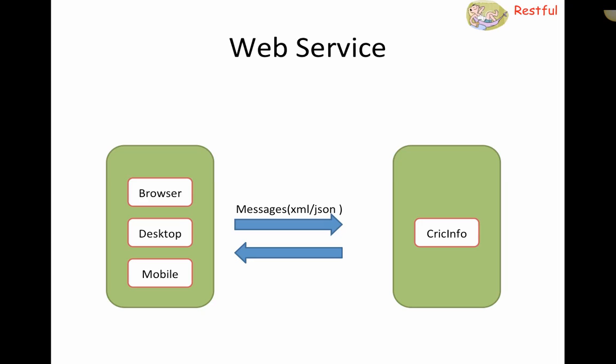Cricinfo and similar sites are accessible by a browser, a fat client on your desktop, or even mobile applications which help you get the latest cricket score. This is what web services is all about — there's a central place where the information is, and you're accessing it using different browsers, desktops, and mobiles. Web services are typically of two types: SOAP and RESTful.